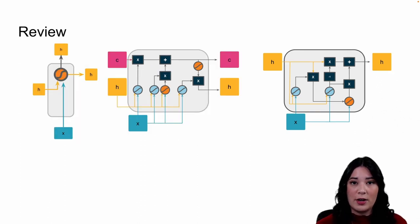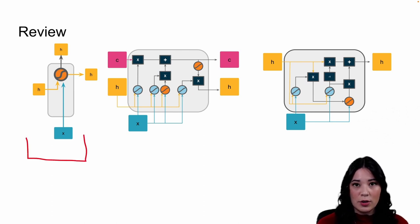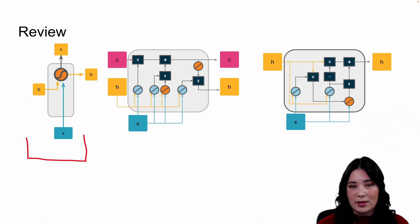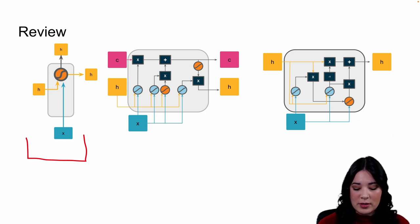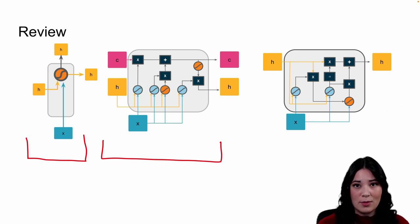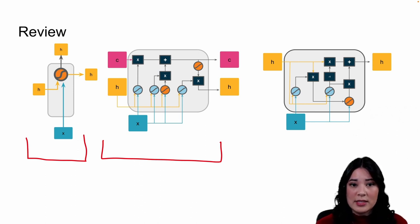We've talked about a lot of different architectures. The simple recurrent architecture takes in input values and hidden states, combines them, and sends them through a hyperbolic tan, resulting in a new hidden state. However, simple RNNs suffer greatly from the vanishing gradient problem, so proposed updates to the architecture have been made. The LSTM has two states: the hidden state, representing short-term memory, and the cell state, representing long-term memory. LSTMs have three gates — the forget gate, the input gate, and the output gate — that help make adjustments to both the cell state and the hidden state.